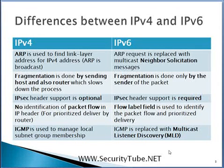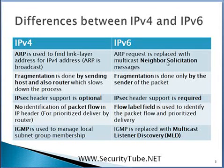For finding link-layer addresses, IPv4 nodes use the ARP mechanism, which has known security flaws and is not supported in IPv6. Instead, IPv6 nodes perform Neighbor Solicitation to find link-layer addresses. Neighbor Solicitation can be coupled with IPsec to be more secure.